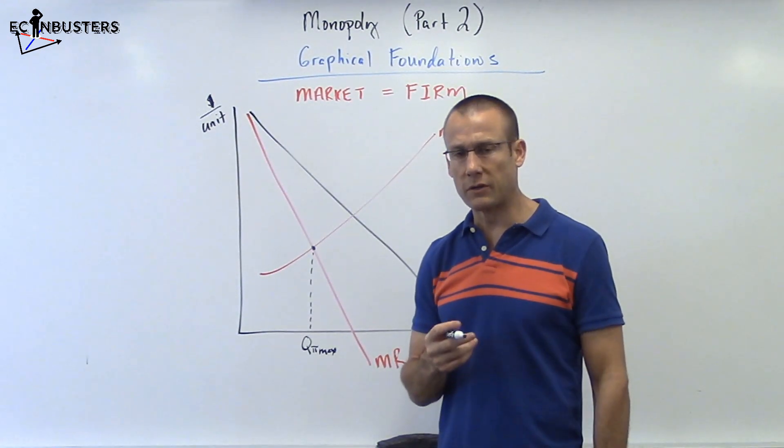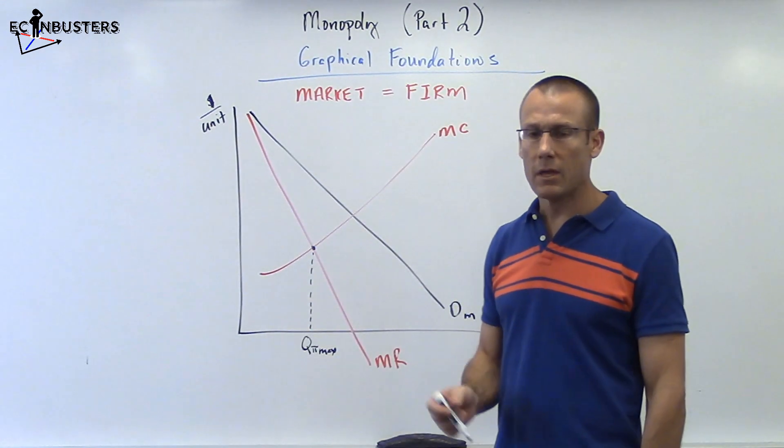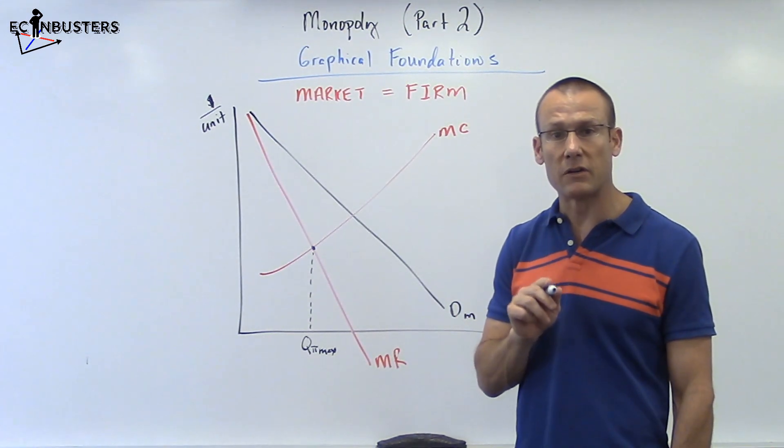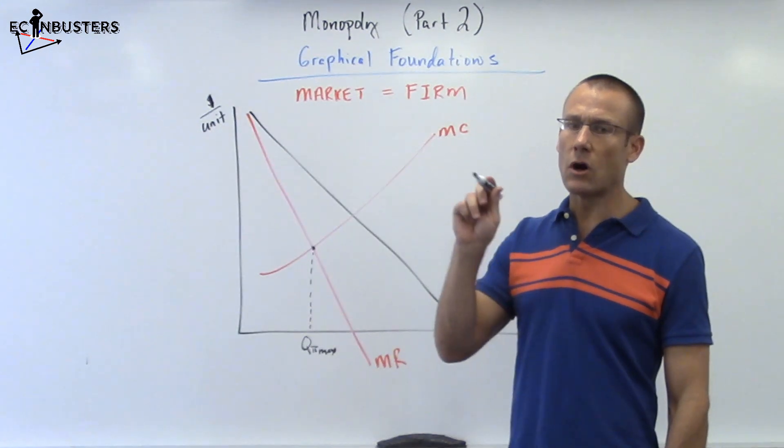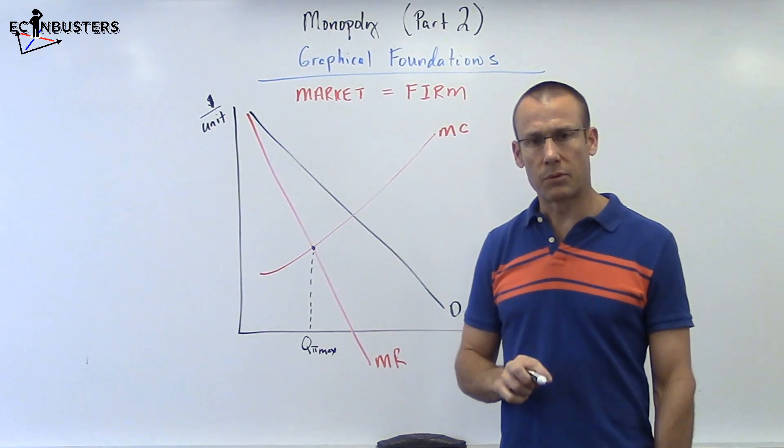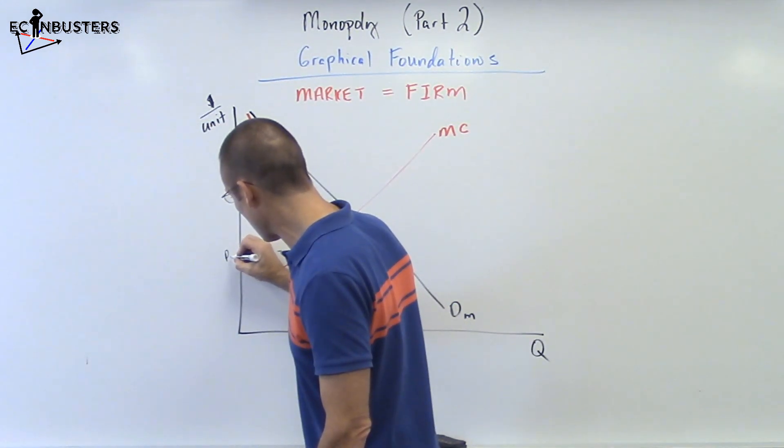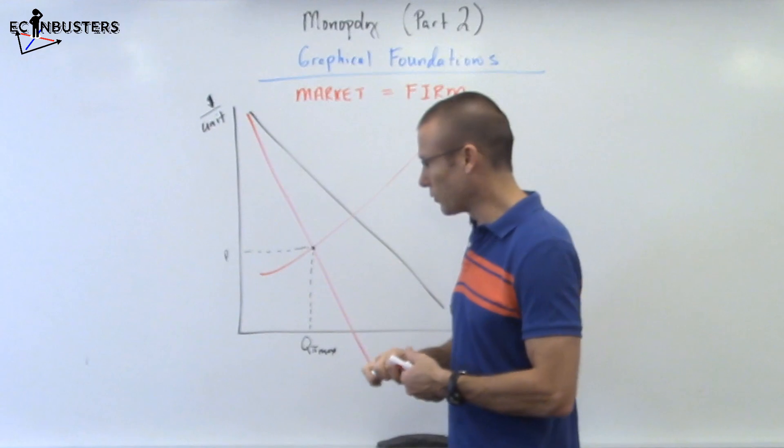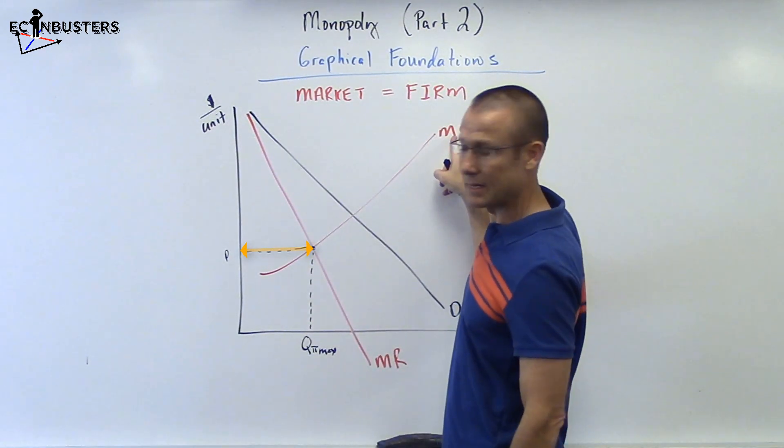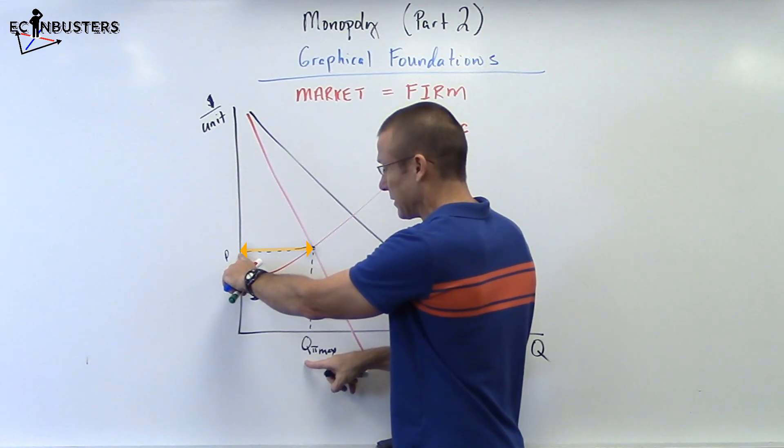But we pause for a second because here's a mistake that we can make. We can go right to there and say that's the price. MC equaling MR is how we find profit maximization level of output. But the price is always based on the demand curve. We're not going to price it right here. Why are we not going to price it right there? Well, I'm going to show you. Imagine that we did. If we priced it right here, here's the result. Quantity supplied, because the MC is the supply curve, so this horizontal distance would be quantity supplied.